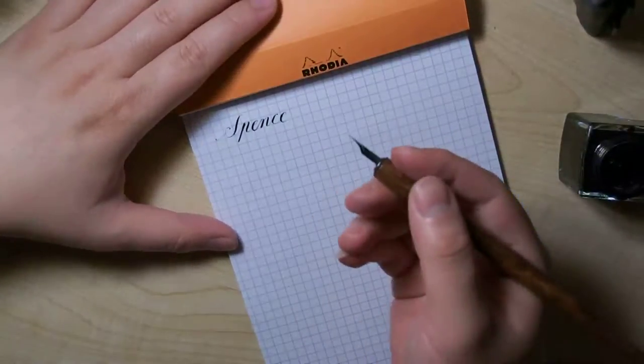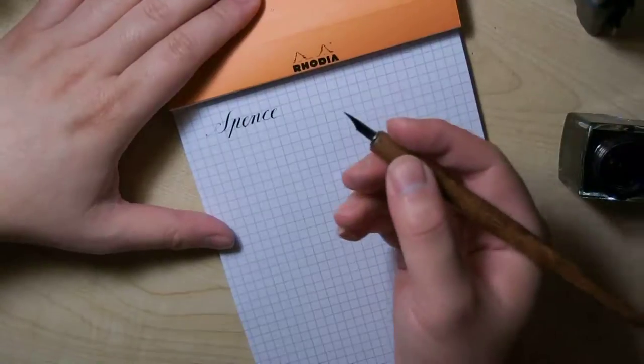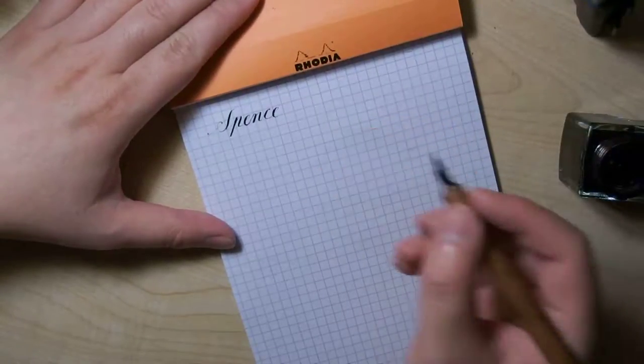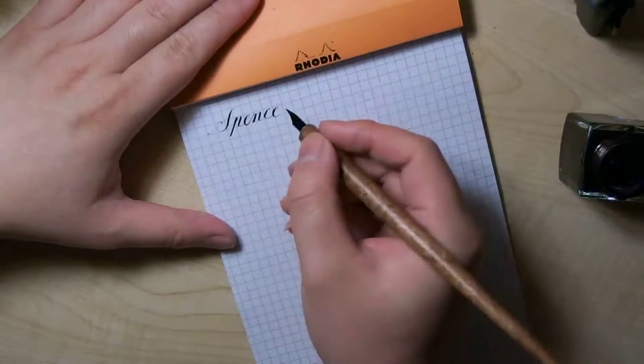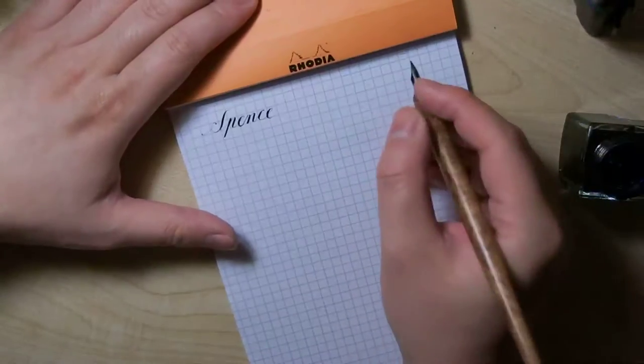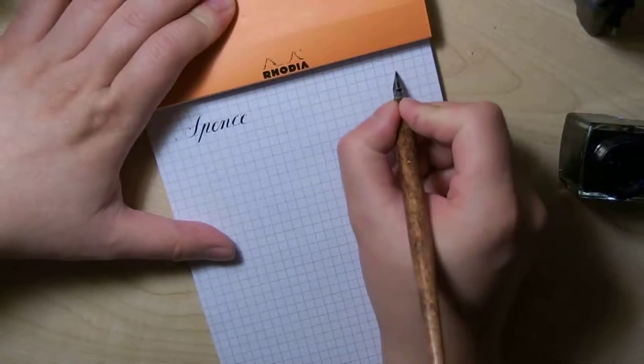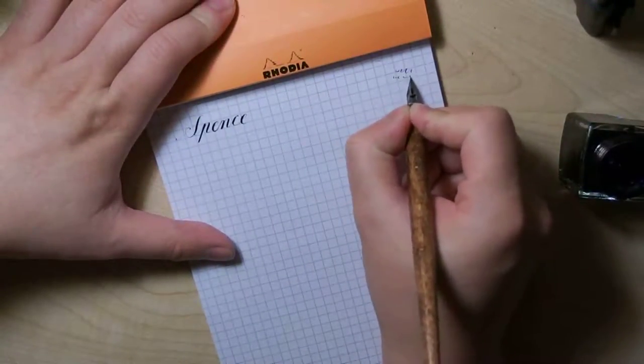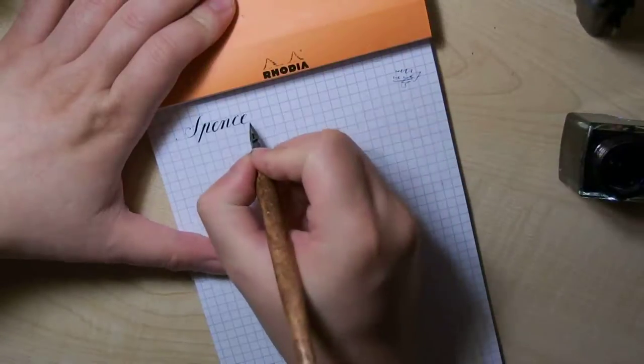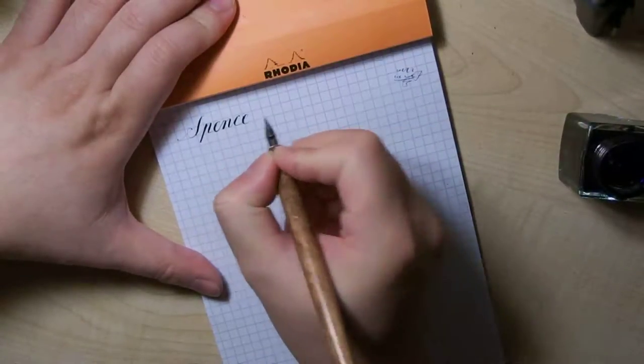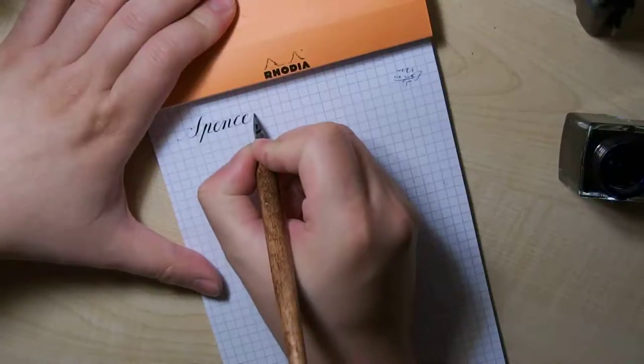Usually when people, when you want to do it properly, you don't just dip and start writing again. You write on another surface, another piece of paper, just to get the feel, get the ink flowing correctly again, then you start to write. But this is just a demonstration.